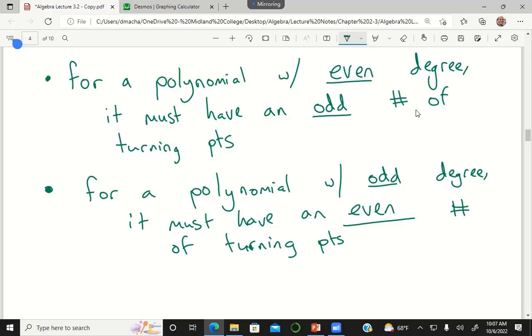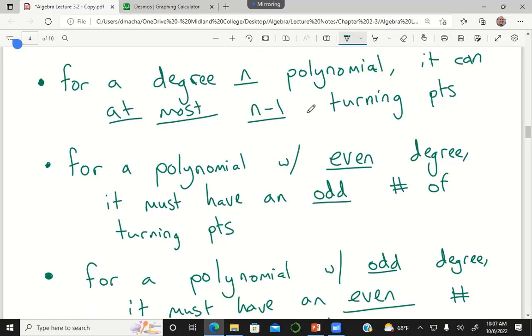What if I have a polynomial of degree 9, am I allowed to have 10 turning points? No, even though 9 is odd and 10 is even, you can't have more turning points than 8, right? Because of my first rule that is now off screen. For a degree 9 polynomial, it can have at most 8 turning points.